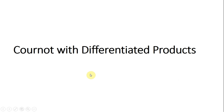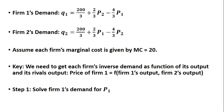Hello, in this video we're going to look at Cournot with differentiated products. Say you're given a setup like this: Firm 1's demand, where Q₁ represents the output of Firm 1 and Q₂ represents Firm 2. Firm 1's demand is given by this equation, and Firm 2's demand is given by this equation.